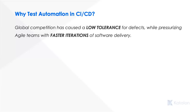Along with low tolerance for defects, the other pressure that delivery and agile teams feel is how soon can we get a new iteration, a new idea, or a better feature into the hands of users as soon as possible. This has resulted in extra pressure on agile teams to deliver in shorter and faster iterations as part of the product lifecycle.